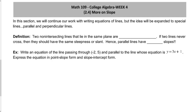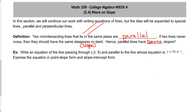By definition, two non-intersecting lines that lie in the same plane are parallel. They do not cross ever — think of railroad tracks. If two lines never cross, then they should have the same steepness or slant. That steepness is referred to as slope, so therefore parallel lines have equal slopes.